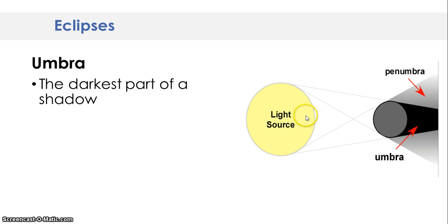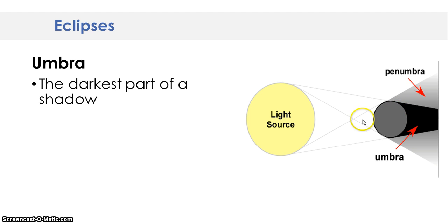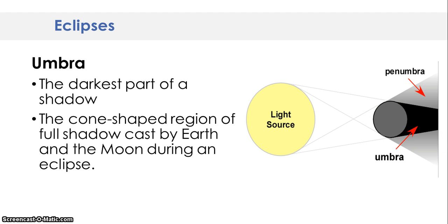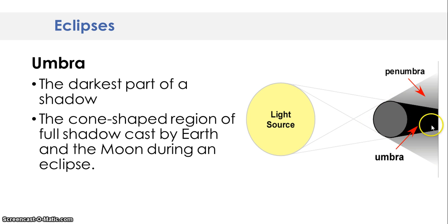When the sun is casting light onto either the Earth or the moon, the Earth or the moon can have a shadow. Within that shadow, they're going to either have the darkest part — the umbra — or the lightest part of the shadow — the penumbra. The darkest part of the shadow is the spot where the light isn't going to deflect around. The cone-shaped region of full shadow cast by Earth and the moon during an eclipse — here's your cone shape right here.